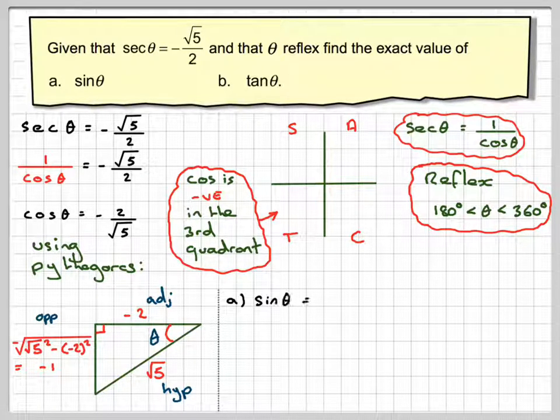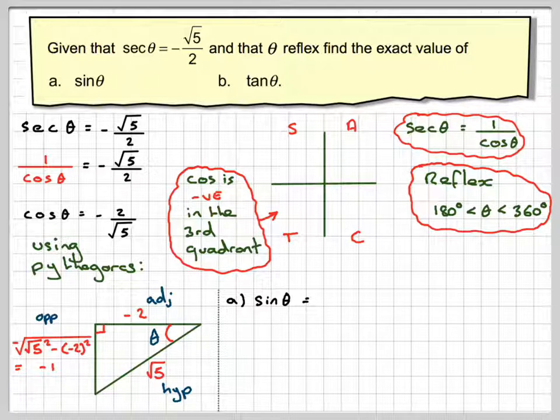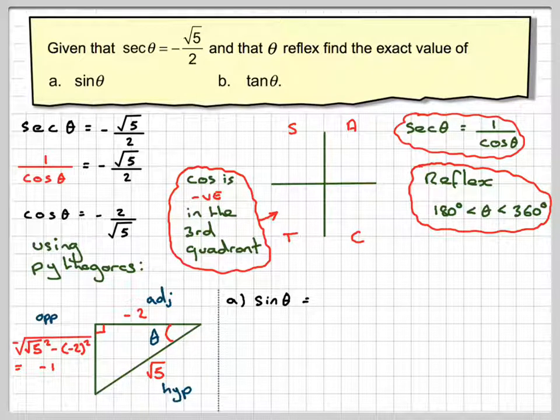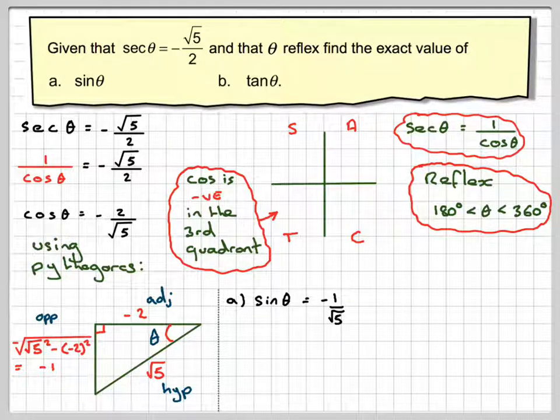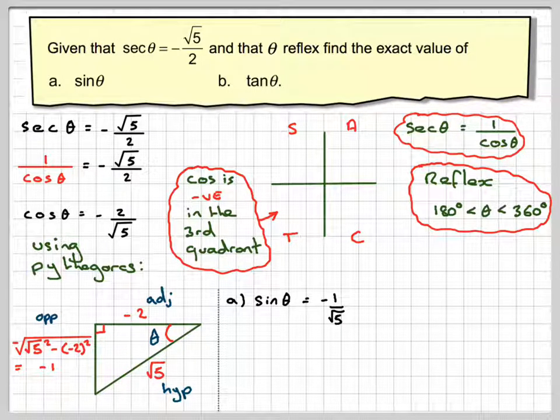Right, now it's easy, because sine θ is going to be opposite over hypotenuse, so that's going to be minus 1, which is the opposite side, over the hypotenuse, which is root 5. Now, normally you rationalize that by multiplying top and bottom by root 5.